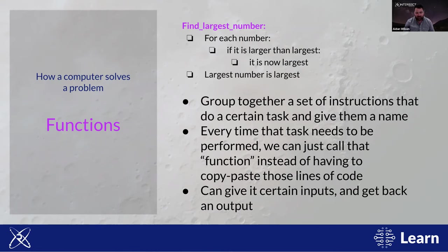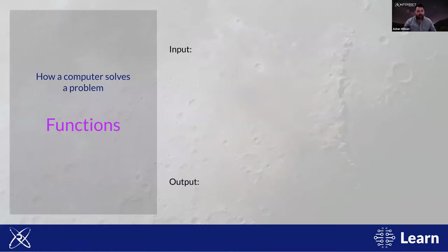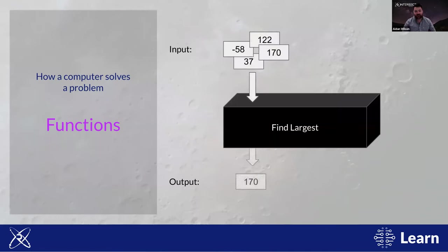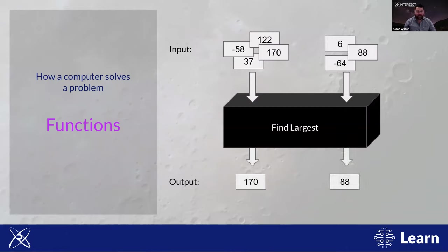Most programming languages have lots of functions built into them. To illustrate: imagine a function as a black box — you feed in a bunch of input numbers and it returns an output. Our first list outputs 170. We can run this again very quickly without modifying our code, just by passing in a different set of input parameters. In the second case, we have fewer input numbers but the function still runs perfectly smoothly and returns the highest number, which is 88.